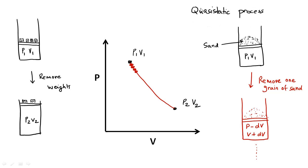A quasi-static process is sometimes called a reversible process. A reversible process is one where the system and surroundings return to their original state when the steps taken during the forward process are reversed. There is a subtle difference between quasi-static and reversible processes. In our system, if we go backwards by adding one grain of sand at a time, we return to the same state of both the system and surroundings, i.e., the universe is restored to what it was originally. The very important characteristic for reversibility is that the universe returns to its original state when the process is done backwards, not just the system.